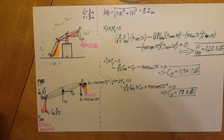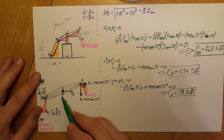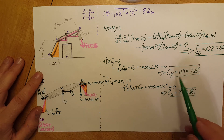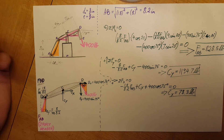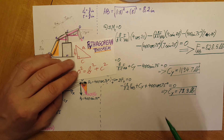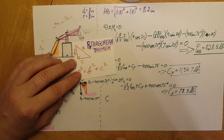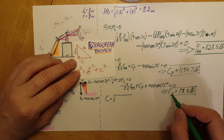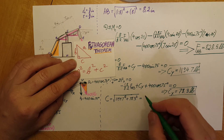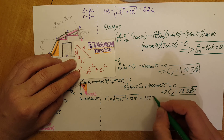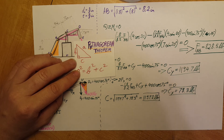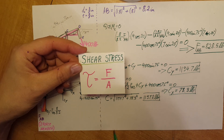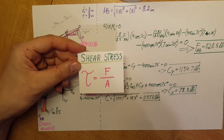Now in order to calculate the stresses at point C, we need the combined force — the resultant of CY and CX. Using the Pythagorean theorem, force C equals the square root of CY squared plus CX squared, which gives us 1197.2 pounds. Now we can resume the strength of materials calculation and go back to the shear stress formula.